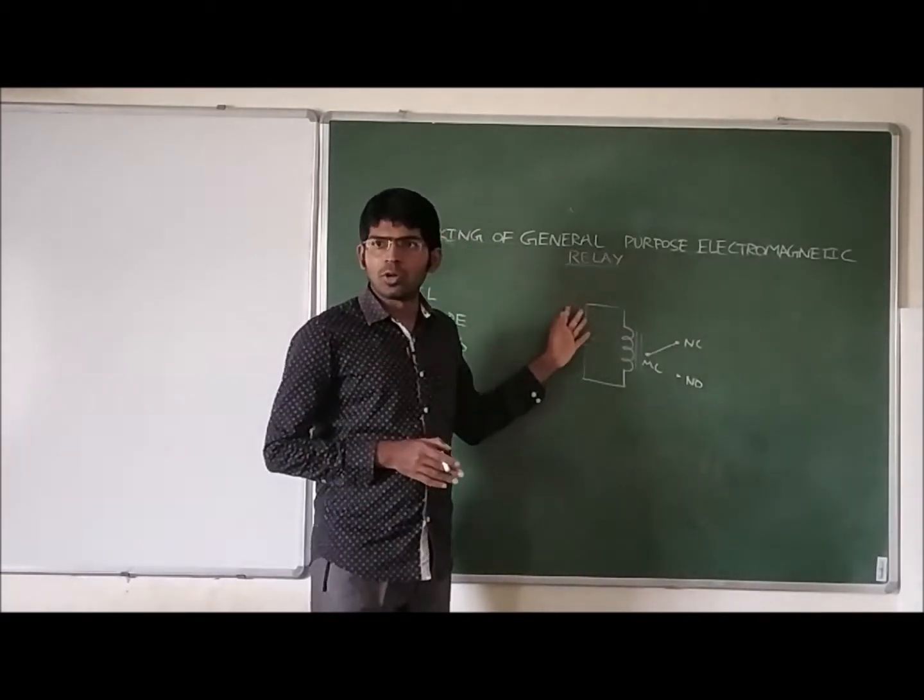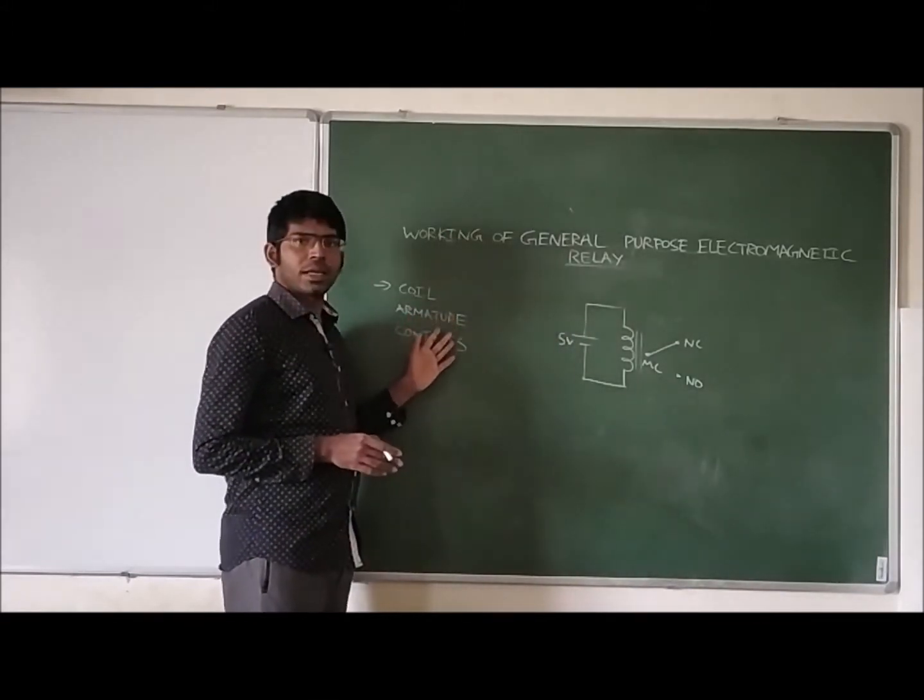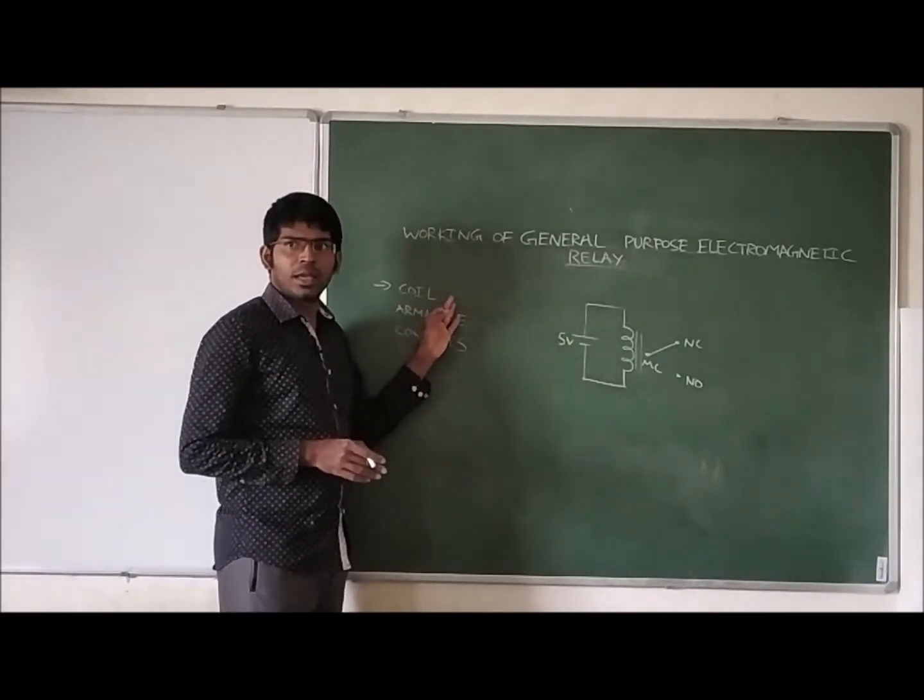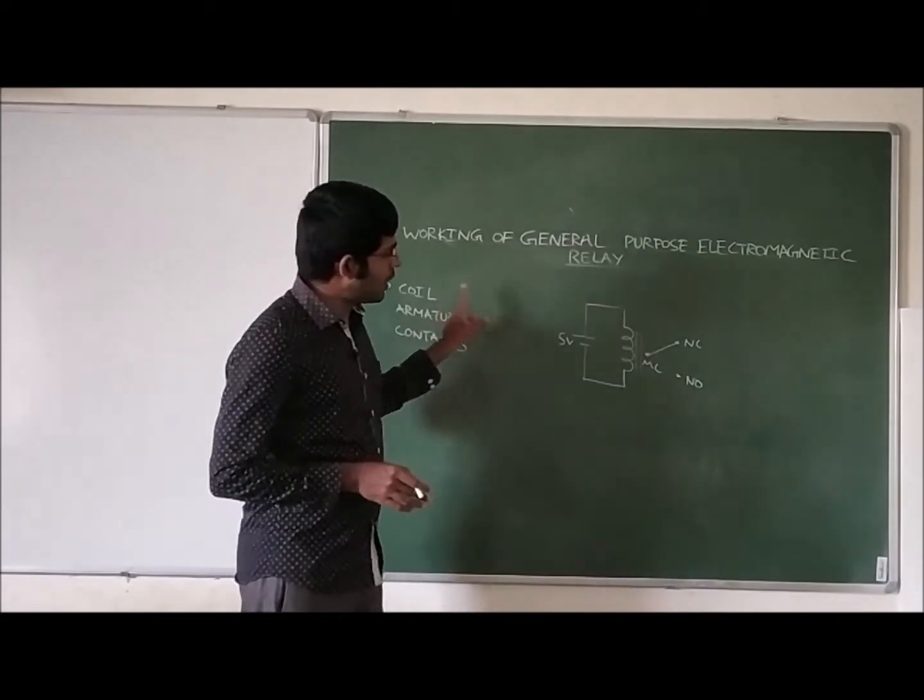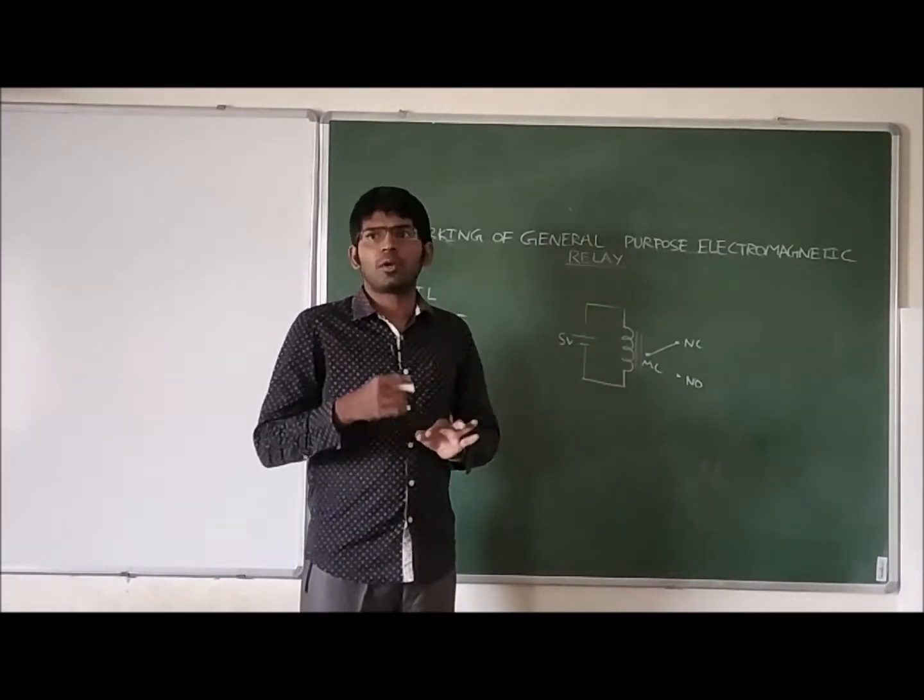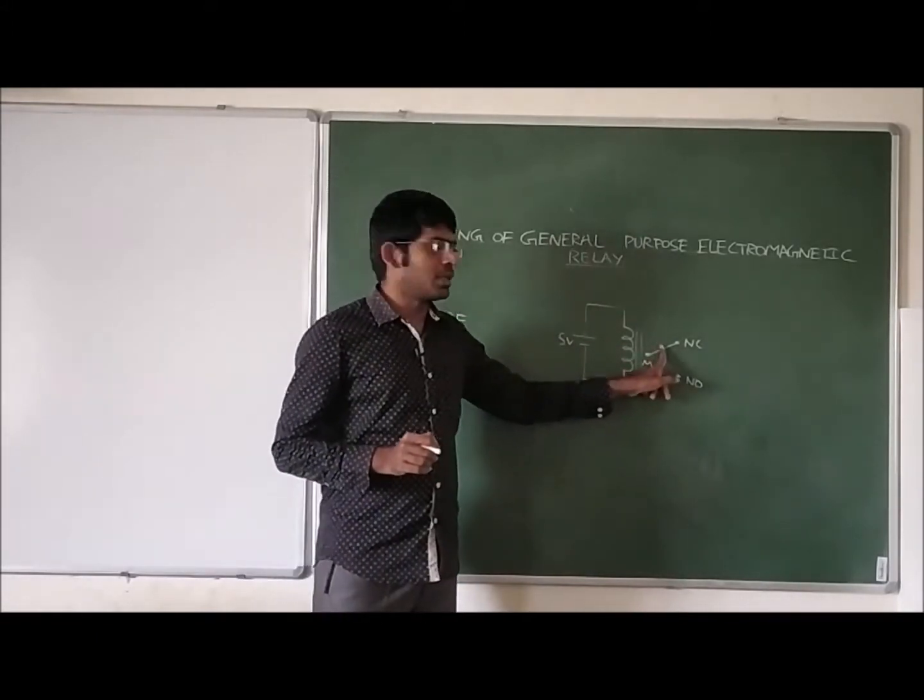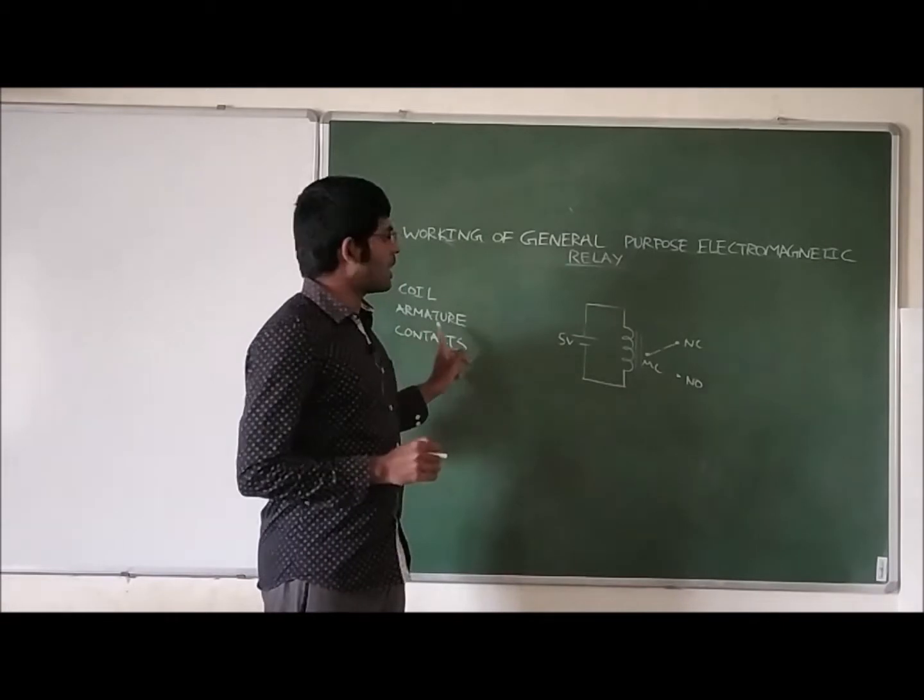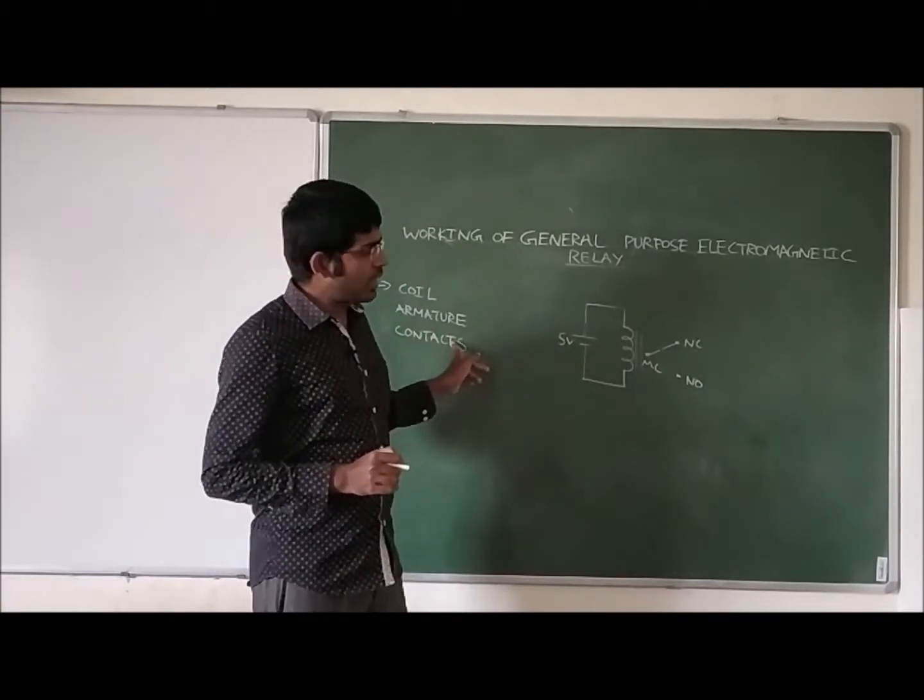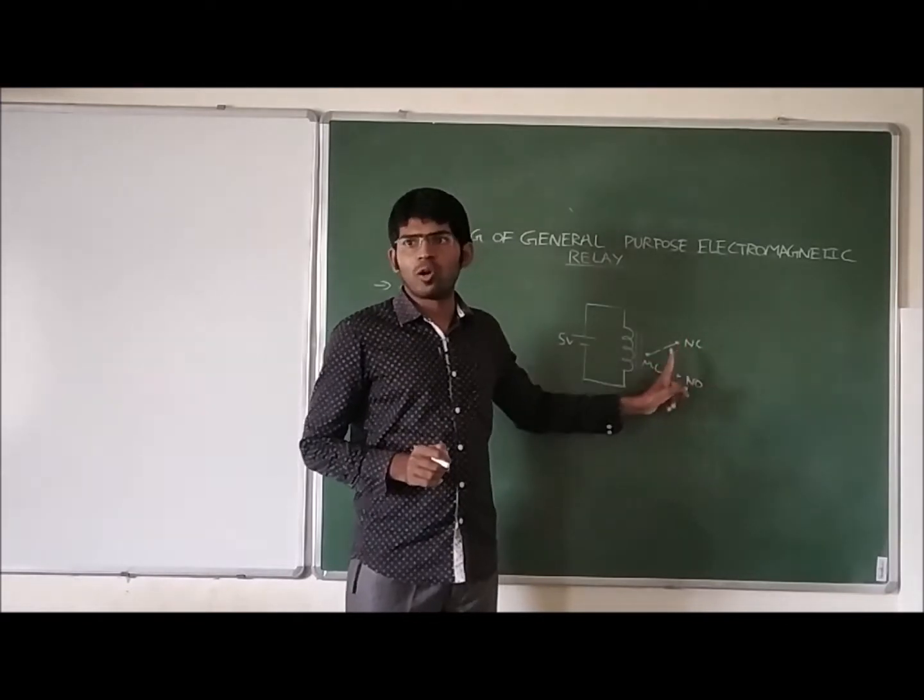Now we are discussing the electromagnetic relay. In the electromagnetic relay, mainly we have a coil. We are using this coil like an inductor. We can use copper wire as a coil. And an armature, this is the armature. And contacts - what are the different contacts? Normally open, normally closed, and movable contact.